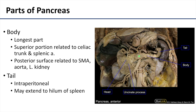The body of the pancreas is the longest part and is considerably thinner than the head. Its superior portion is closely related to the celiac trunk and its branch, the splenic artery, which has a very tortuous, squiggly course — which makes sense as it supplies the spleen. Posterior to the body, it is related to the superior mesenteric artery, the aorta, and portions of the left kidney. The tail of the pancreas is closely related to the hilum of the spleen and, as discussed, is considered intraperitoneal.